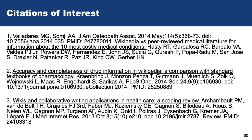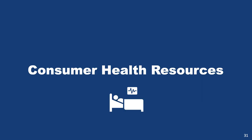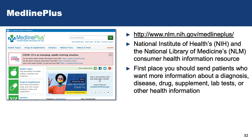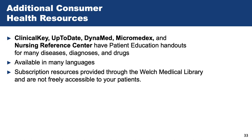It's good to know what's out there on the internet because chances are this is where your patients are looking before they come to see you. You can help your patients by providing them with information from more authoritative and evidence-based sources, which leads us to consumer health resources like MedlinePlus and patient handouts. MedlinePlus is the National Institutes of Health and the National Library of Medicine's consumer health information resource. It provides easy-to-understand information about diseases, drugs, and laboratory tests in a wide range of languages. In addition, ClinicalKey, UpToDate, and Micromedex all have patient education handouts that you can print out and give to your patients. These are written to a 4th to 5th grade reading level, include links to additional credible resources, and are available in many languages.